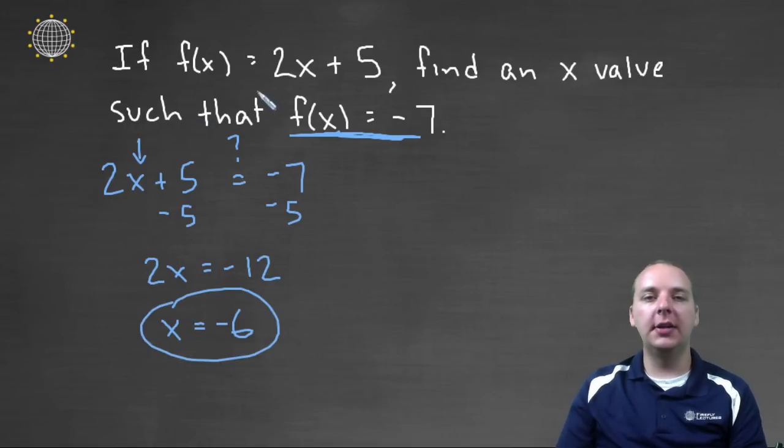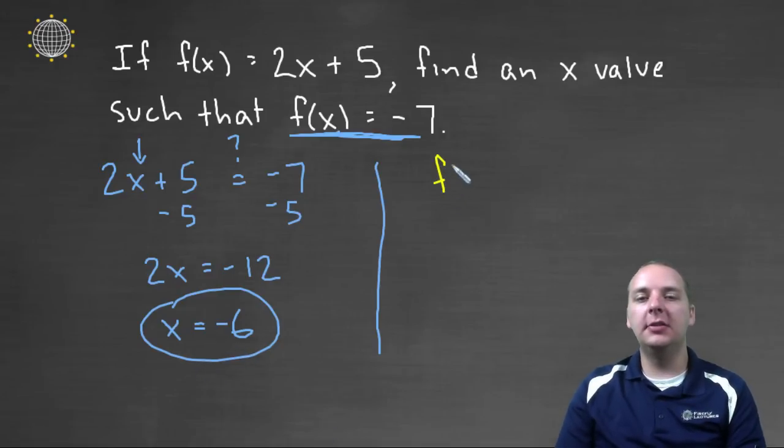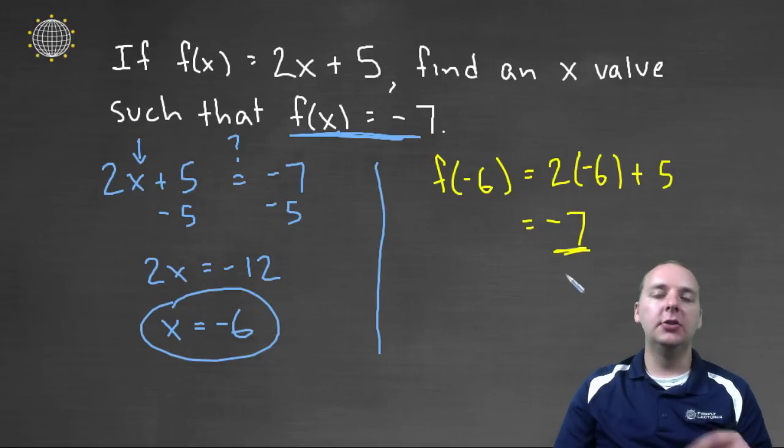So let's read the question again, and let's make sure this answer makes sense. We were looking for an x value such that f of that x value would give us negative seven. Let's try it, let's see, you know, now that we're done, we're finished with the problem. Let's just see out of curiosity, what is f of negative six? Let's try it. Two times negative six is negative twelve. Negative twelve plus five does in fact give us negative seven.